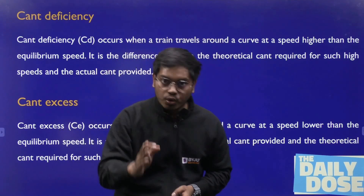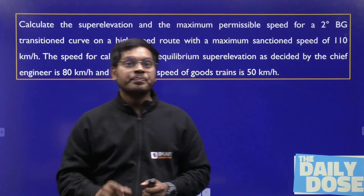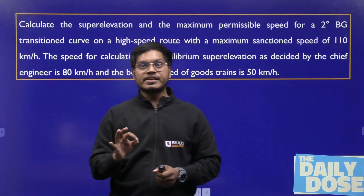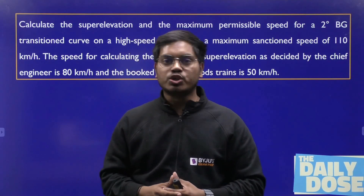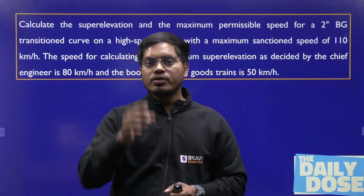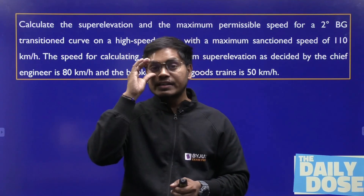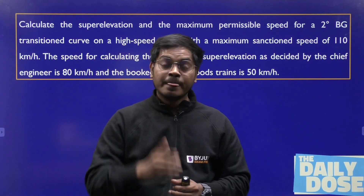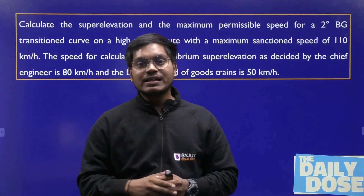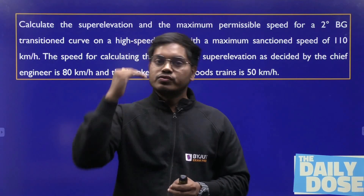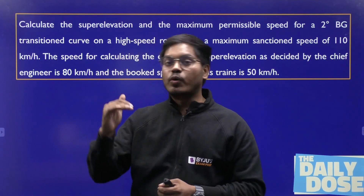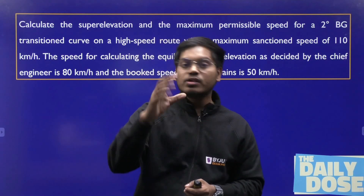Here is a sample question: calculate the superelevation and the maximum permissible speed for a 2-degree broad gauge transition curve on a high-speed route with a maximum sanctioned speed of 110. In such questions, three types of speeds are given: maximum sanctioned speed, equilibrium speed, and booked speed. First, find the superelevation corresponding to equilibrium speed — that is your actual cant. Then find the cant corresponding to maximum speed — that is your theoretical cant. Subtract them to get cant deficiency and check if it is within limits. Then find cant corresponding to booked speed, check cant excess is within limits, and that is how you solve the question.